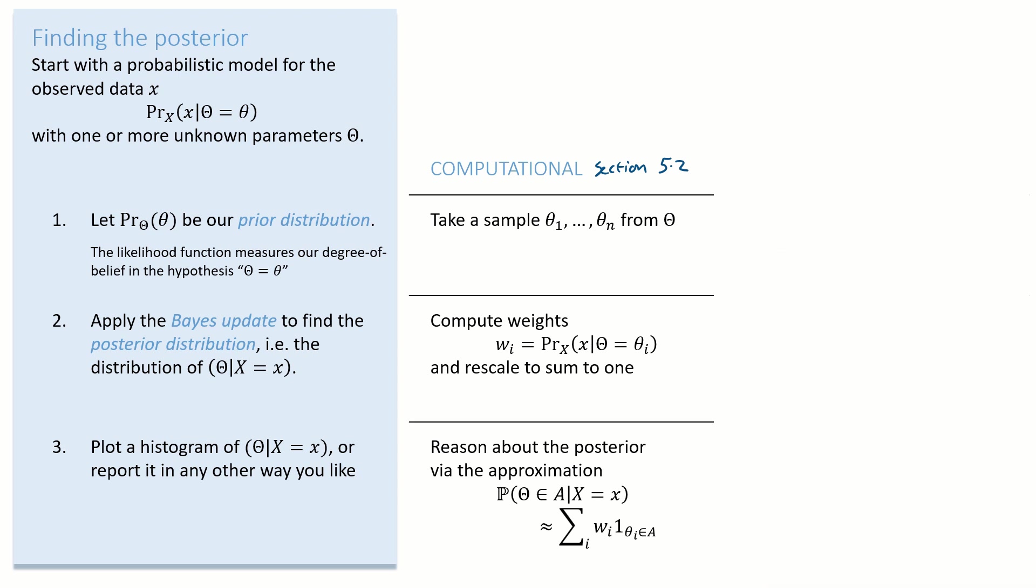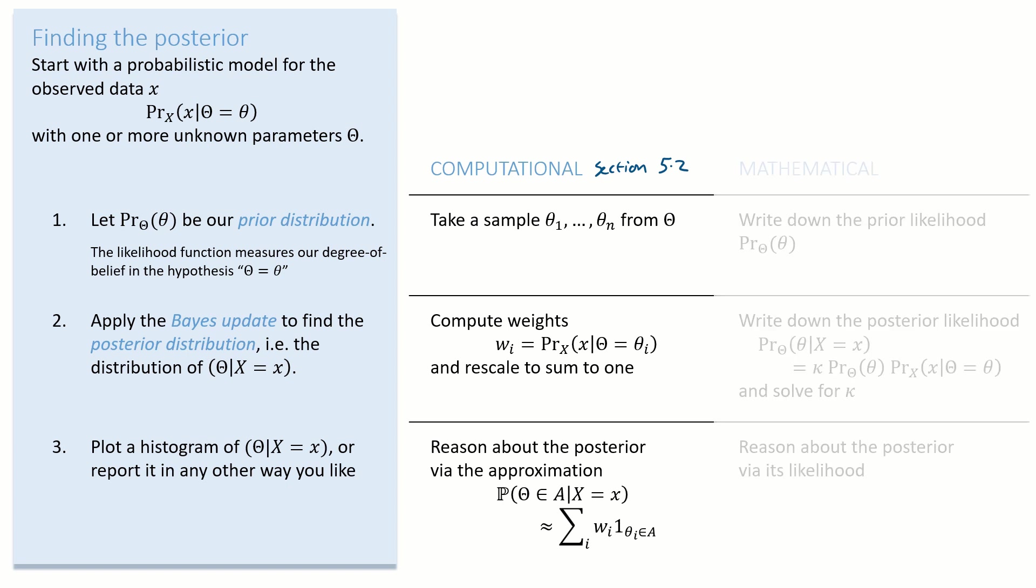Alternatively, we can do all this mathematically using the method from section 4.2. Step one, write out the prior likelihood function. Step two, write out the posterior likelihood function using Bayes rule and find the constant kappa that we need to make this be a valid density function. Step three, whatever we want to report, we should derive it from the posterior likelihood function. For example, we could simply plot the likelihood function.